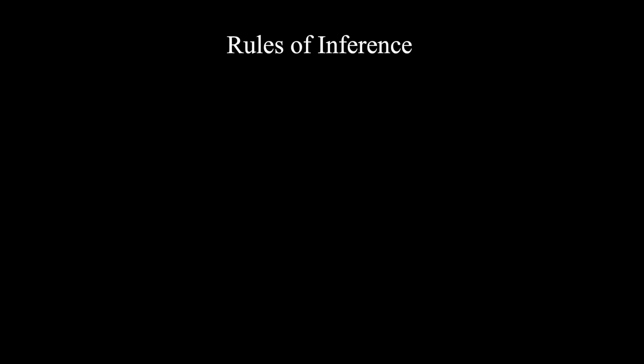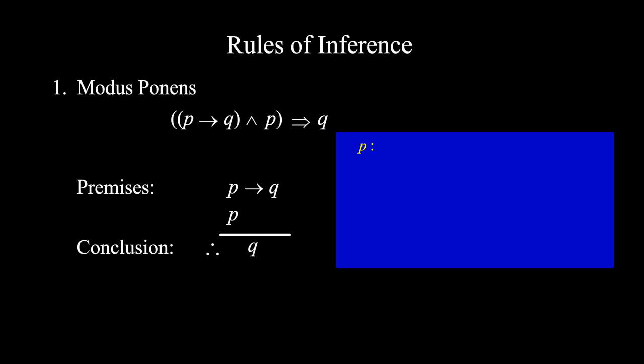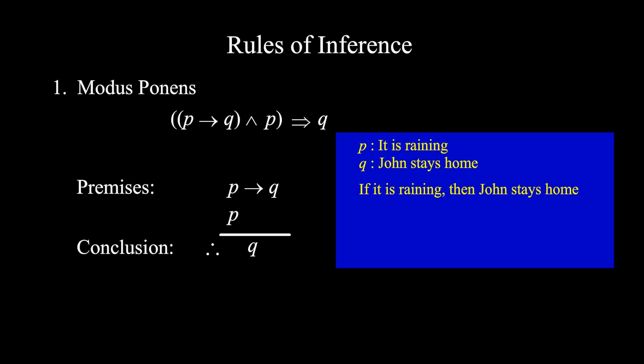Here are some of the rules of inference. We will mention how you can understand or memorize them. One: Modus Ponens — p implies q, and p, therefore q. Consider the following: let p be 'it is raining' and q be 'John stays home.' If p then q will be 'if it is raining then John stays home.' The fact is that it is raining — that is p. So what do we conclude? Yes, John stays home — that is q.